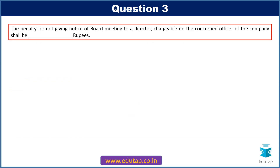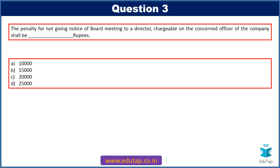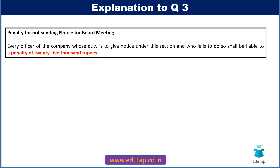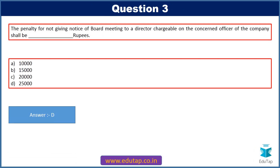Question number 3: The penalty for not giving notice of a board meeting to a director, chargeable on the concerned officer of the company, shall be how much? Options are 10,000, 15,000, 20,000, or 25,000 rupees. Penal provisions are very important. Every officer of the company whose duty is to give notice under this section, if he fails to do so, shall be liable to a penalty of 25,000 rupees. The correct answer is option D — 25,000 rupees.